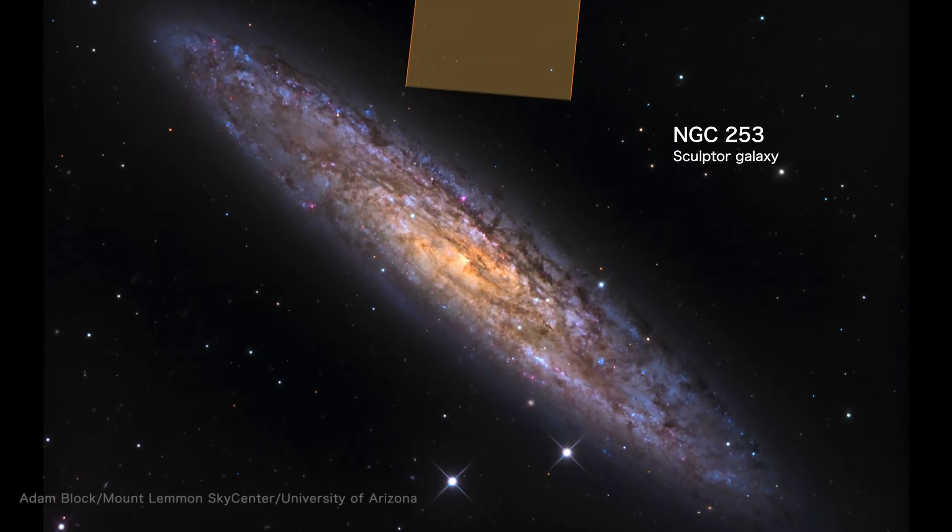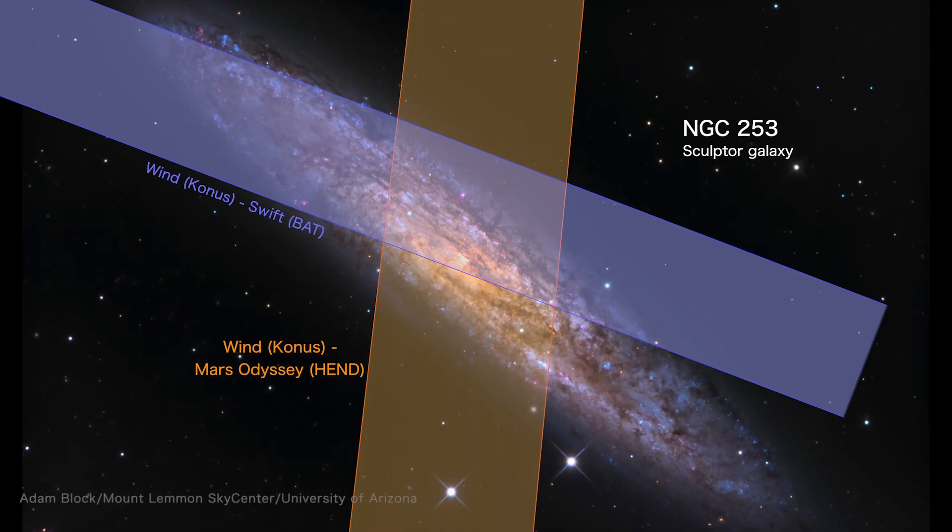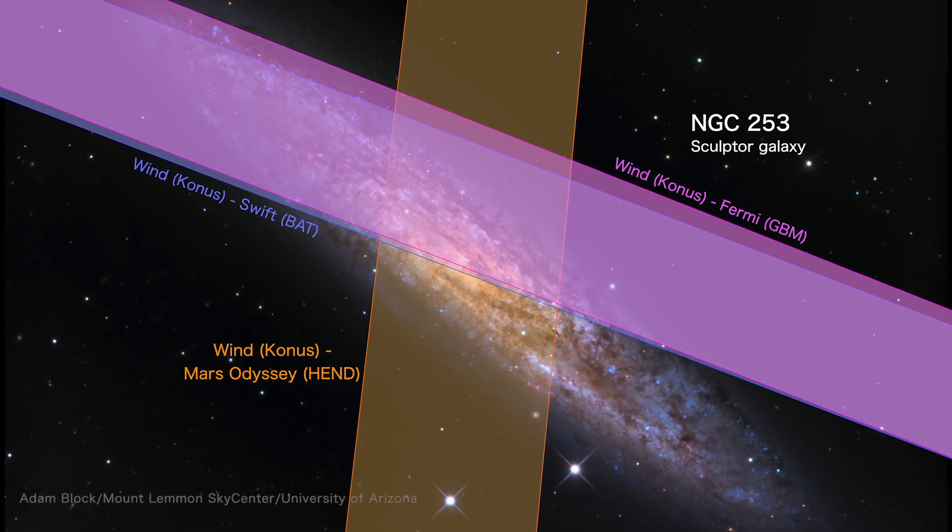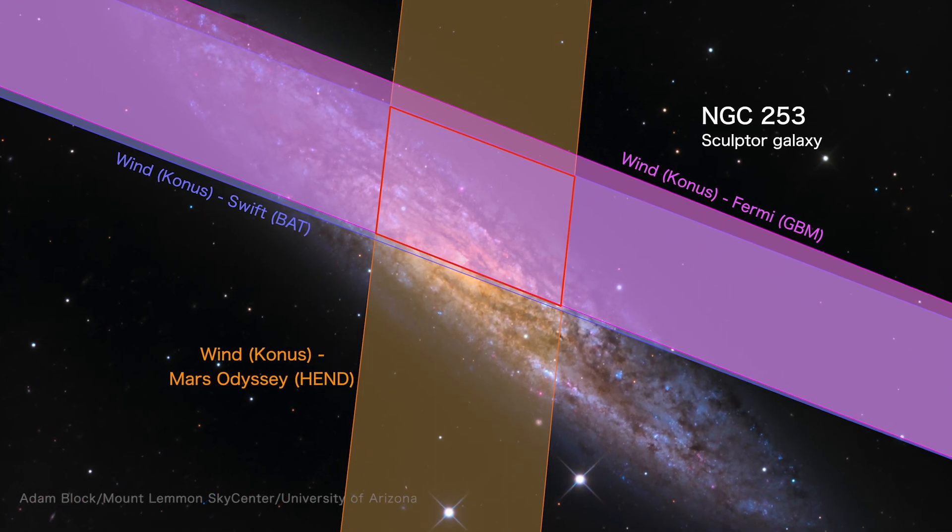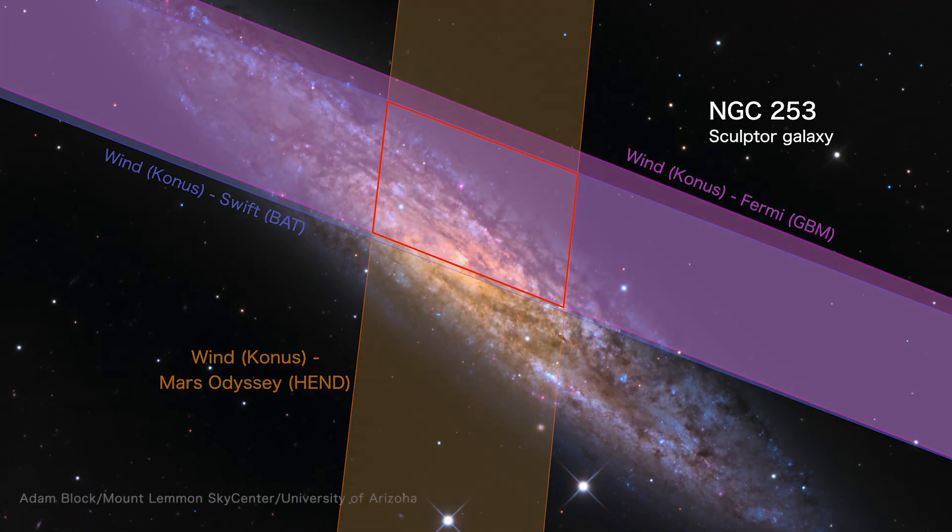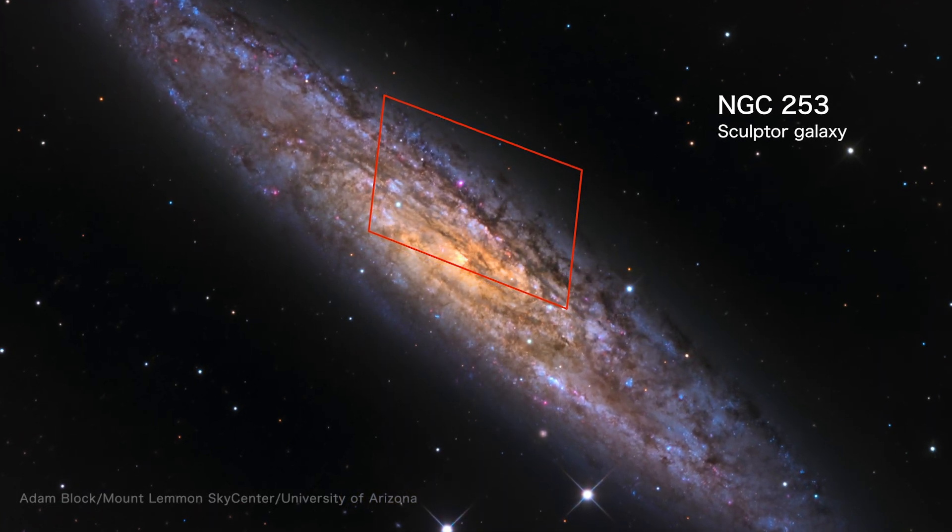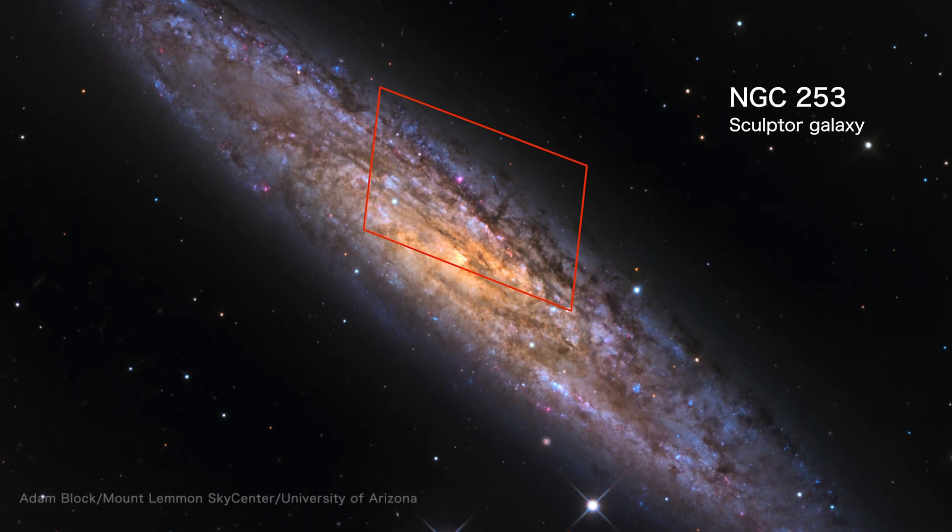Using the arrival times of the signal at different spacecraft, astronomers pinned the burst to NGC 253, a bright, nearby galaxy. From start to finish, the event lasted just 140 milliseconds, as fast as a finger snap.